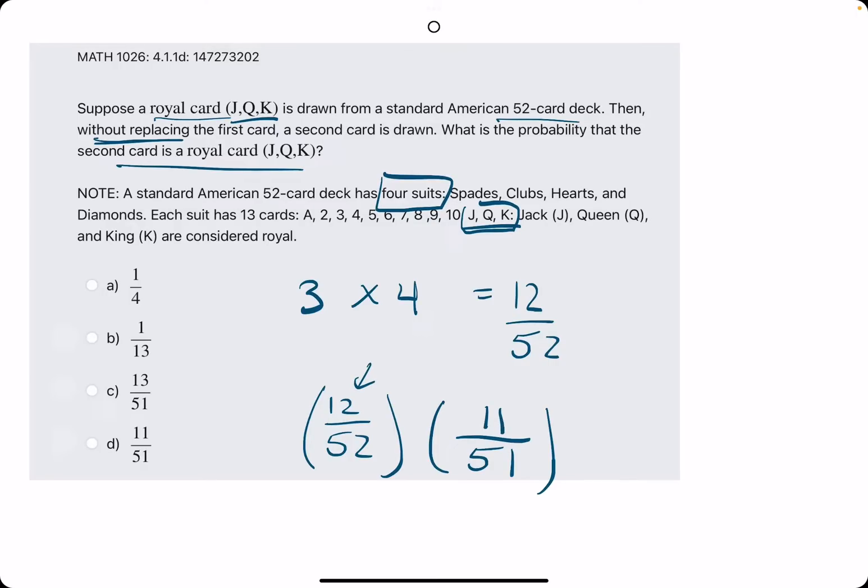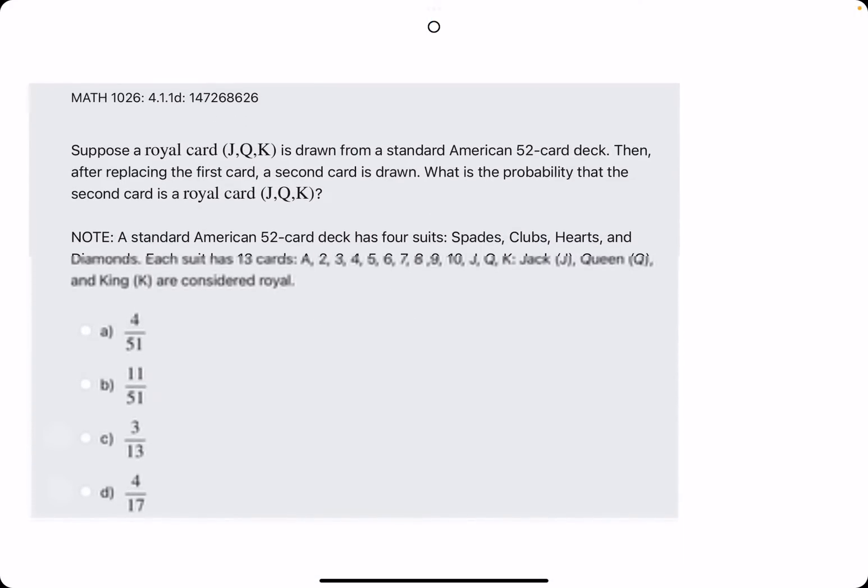And a mistake I made previously, a nice distinction to make is, you are already assuming that this first card has been drawn. They don't want to know what the probability of drawing the first card, then the second card is. They just want to know the probability of drawing that second card if we have not replaced the first card. And so just 11 over 51 is what they're looking for. So let's try a couple more.